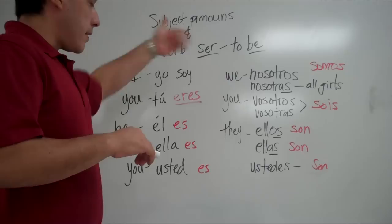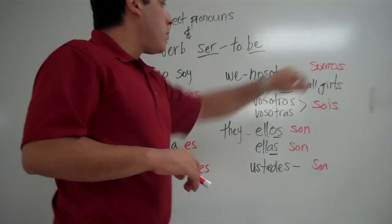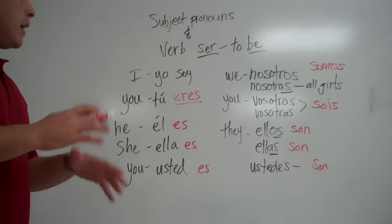So, what we have here is we have the verb to be which is ser. And we have it conjugated. We have it changed to match who we're talking about. So, we're always going to pair up yo and soy. We're always going to pair up tú eres. Él es. Ella es. Usted es. Nosotros somos. Vosotros sois. Ellos, ellas, ustedes all go with son.